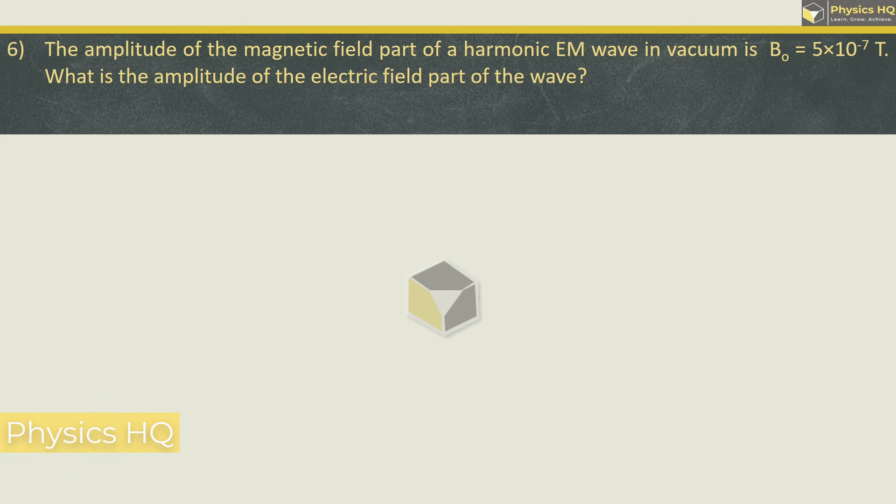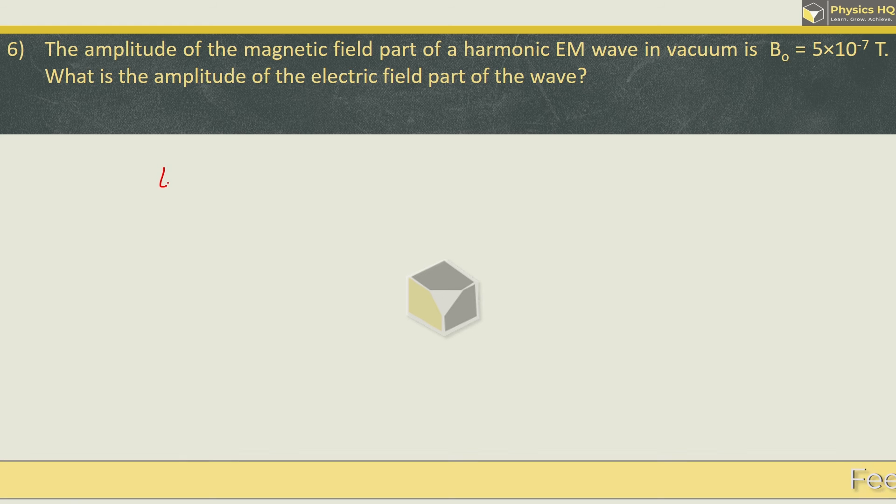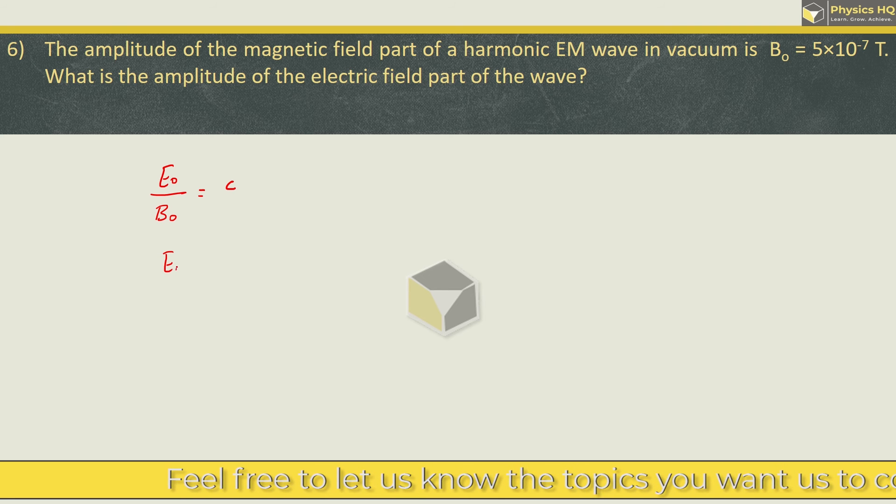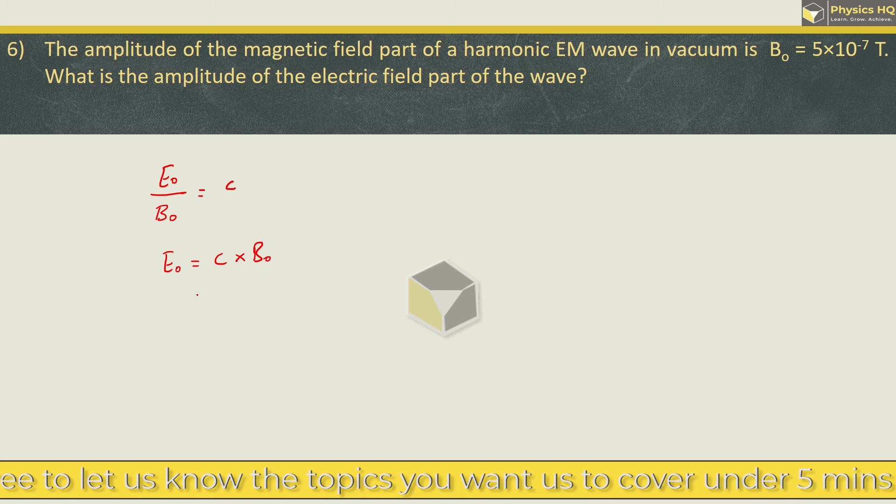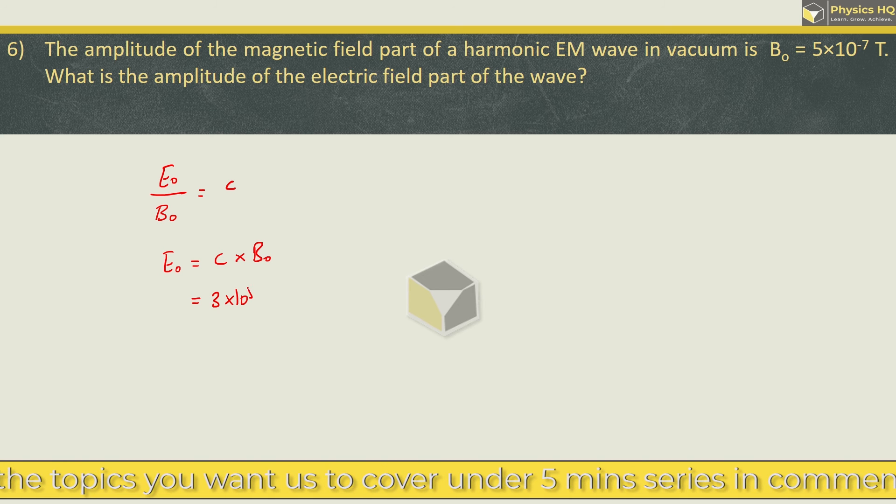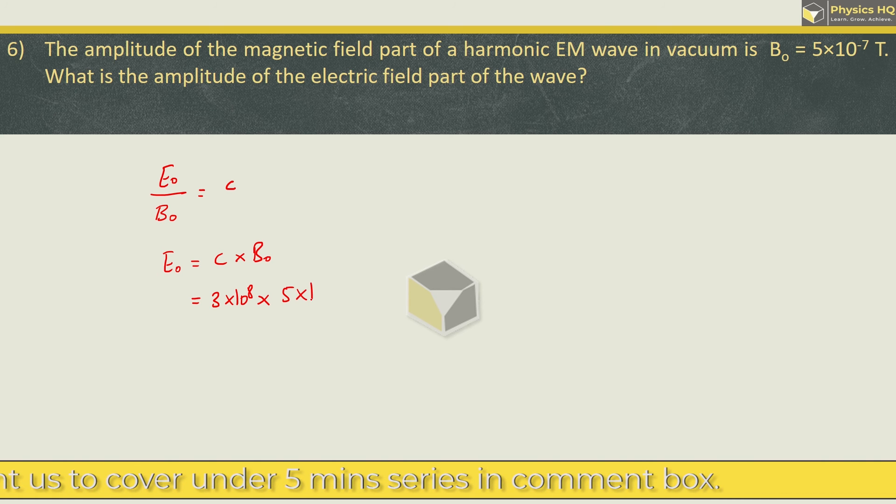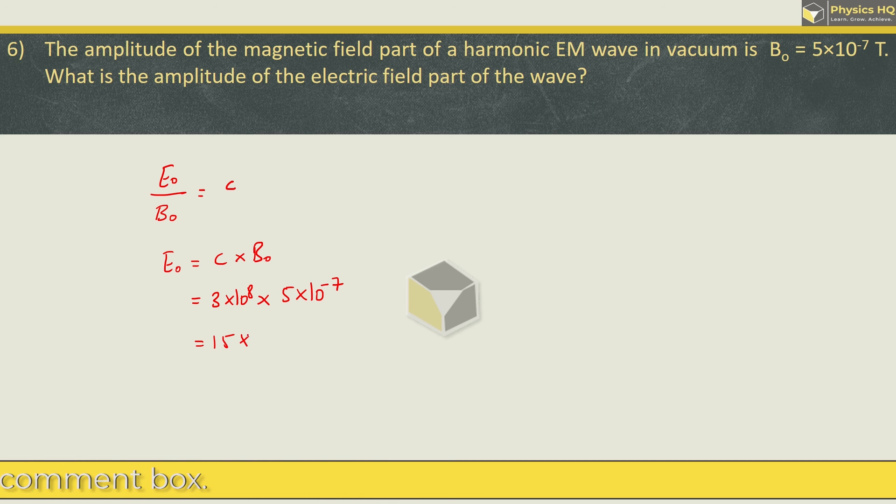Let us check out the next sum. The amplitude of the magnetic part of a harmonic EM wave in vacuum is 5 into 10 raise to minus 7 Tesla. What is the amplitude of electric part of the wave? For this we need to remember this formula: amplitude of electric component upon amplitude of magnetic component equals speed of light 3 into 10 raise to 8. So E0 is equal to C into B0. C is 3 into 10 raise to 8, B0 is 5 into 10 raise to minus 7. So we got the magnitude as 150 volt per meter.